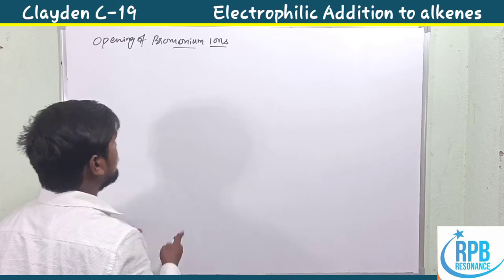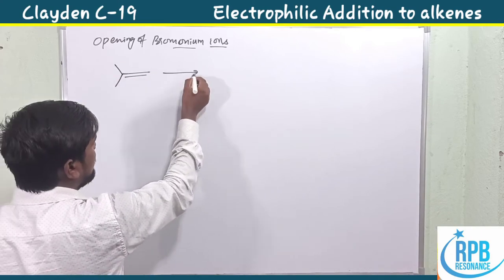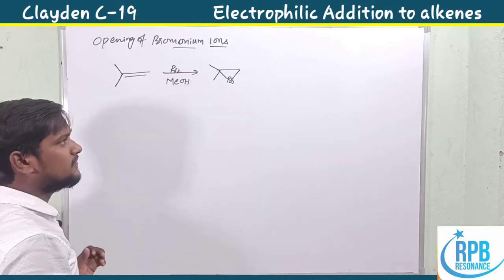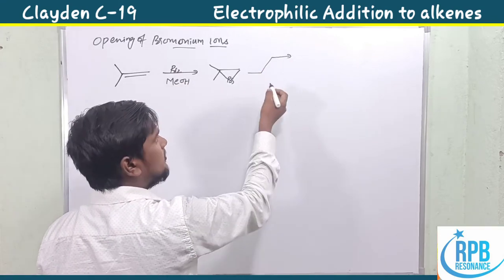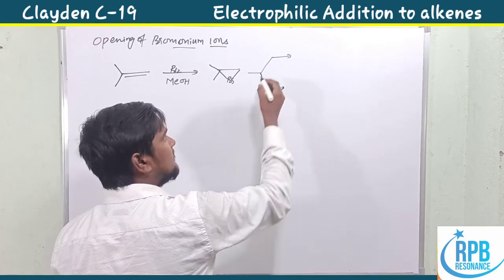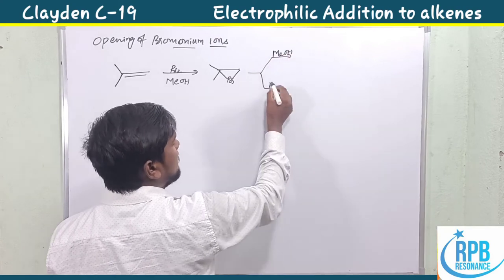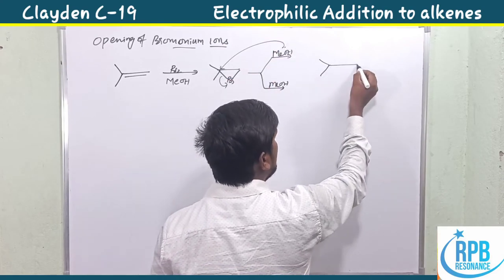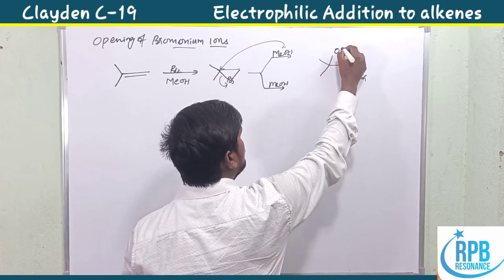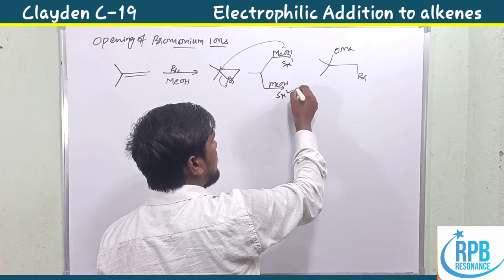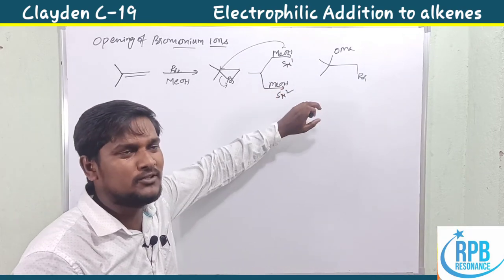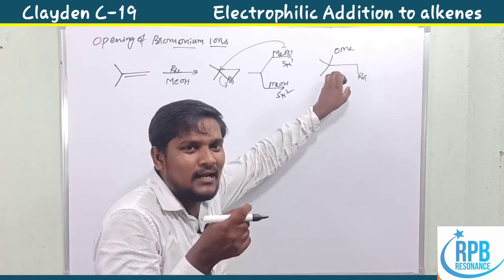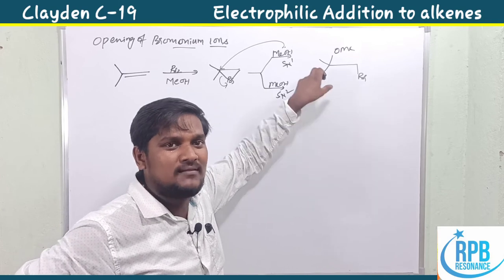A good example is 2-methylpropene treated with bromine in methanol as solvent to form the bromonium ion. In methanol, two cases are possible: SN1 mechanism or SN2 mechanism, in either acidic or basic medium. In both cases we get the sterically more crowded side attacked, because the methyl groups stabilize a carbocation at the tertiary position, creating a more stable carbocation stabilized by the three-membered ring halogen and the two methyl groups.